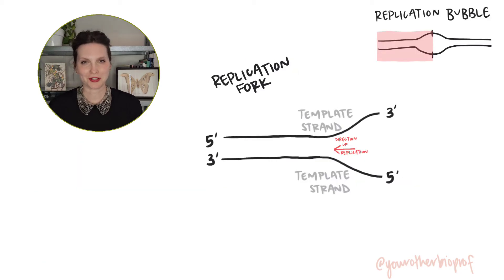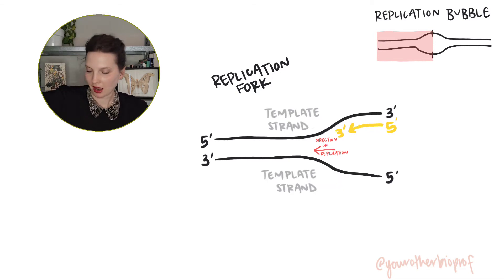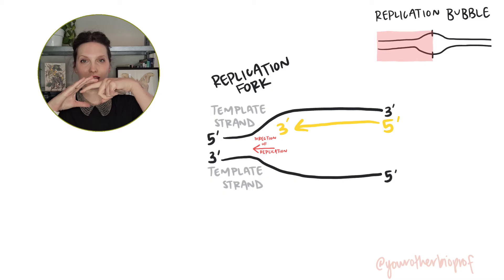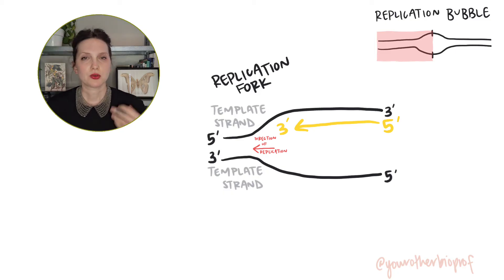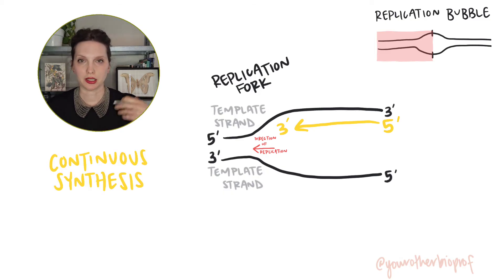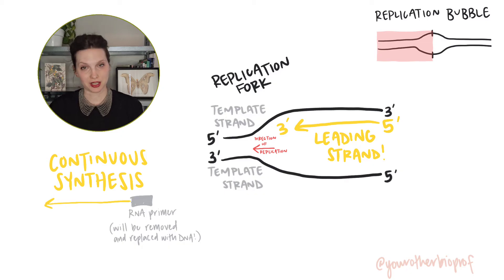Now for one of our template strands, this is absolutely no problem. Just based on its orientation, we can easily start to construct a new anti-parallel strand that is going to have its three prime end going into the fork, so we can grow it into the fork. This strand is synthesized continuously — we're going to lay down one RNA primer and get to work. This strand is called the leading strand.